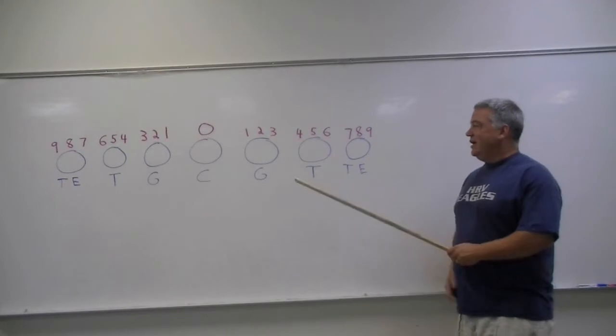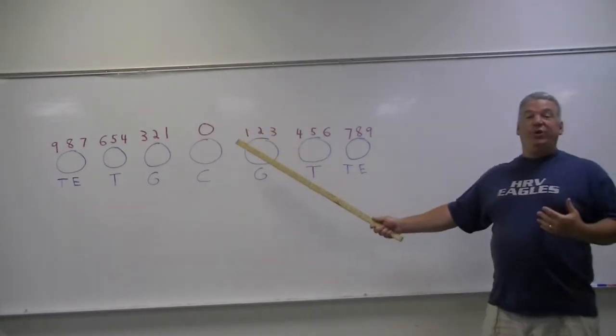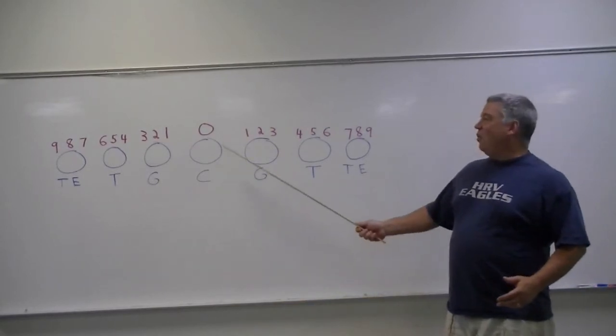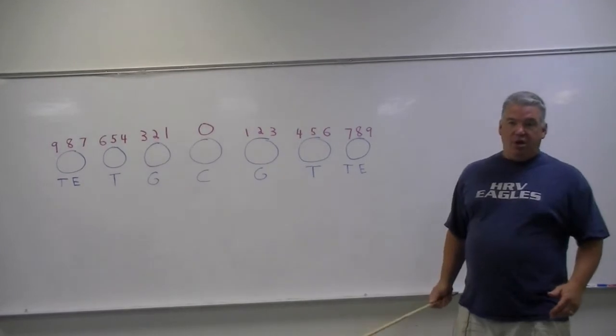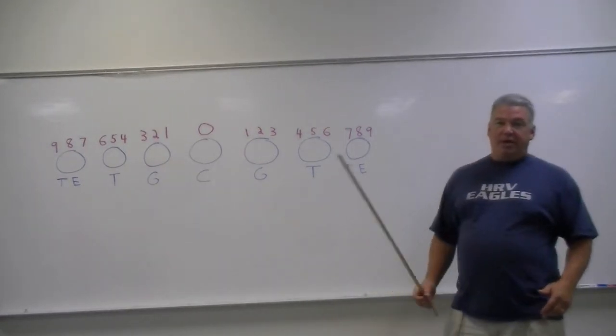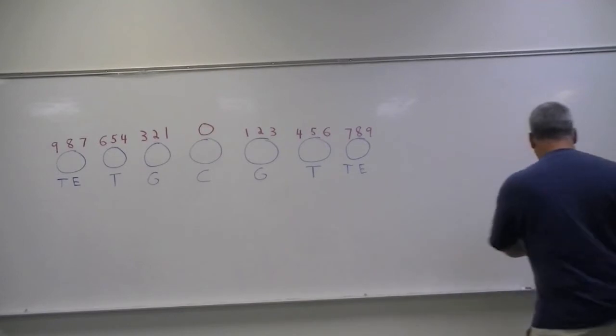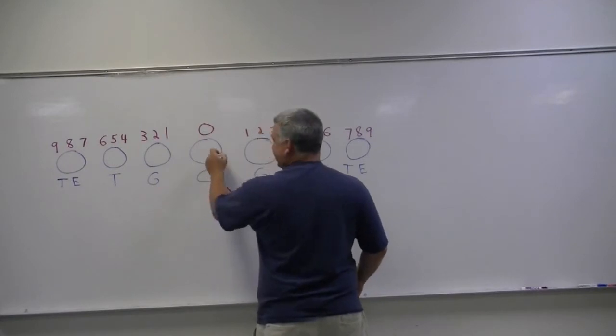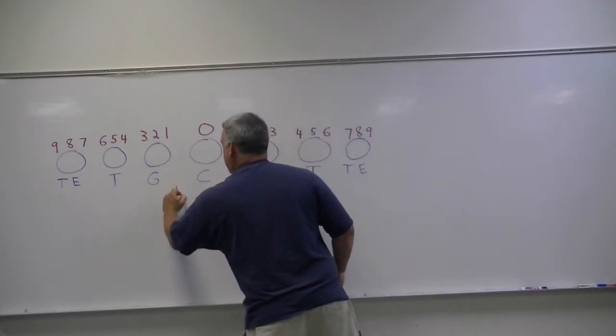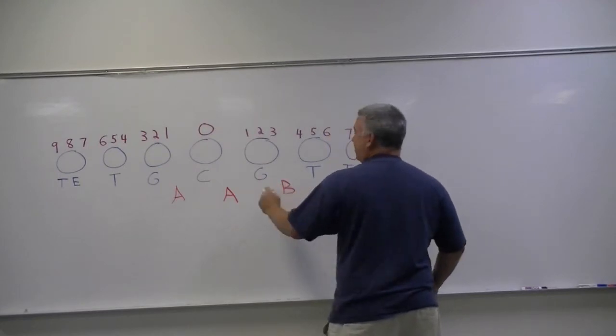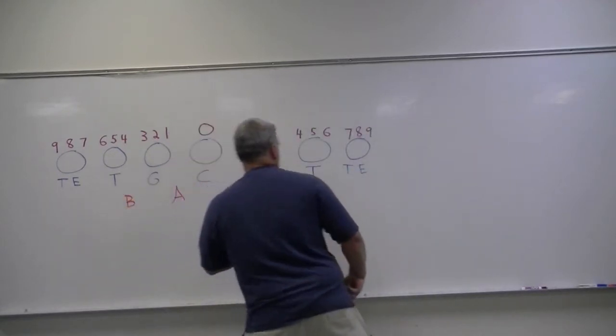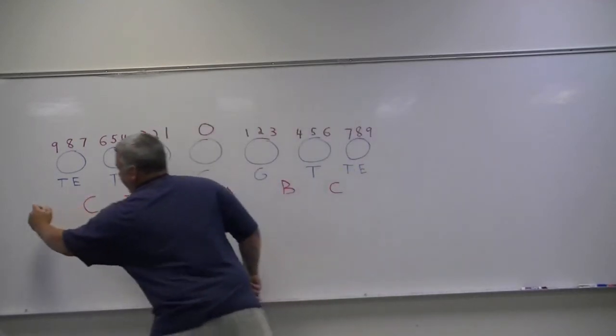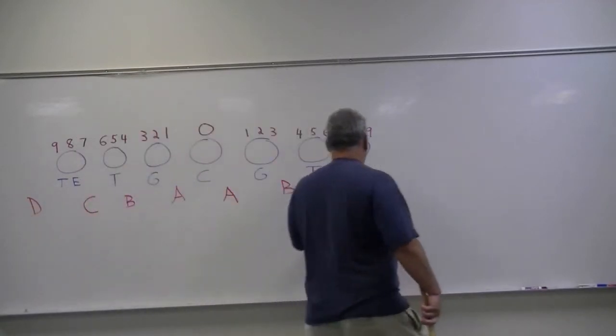One thing that I would mention here is notice that the way we teach techniques is we align them with the man. So we never say hey I want you lining up in the A gap or I want you lining up in the B gap. If those are unfamiliar terms for you, generally these are the A gaps between center and guard, these are the B gaps between guard and tackle, and C gaps between tackle and tight end if there's a tight end. And you can even talk about a D gap out here.